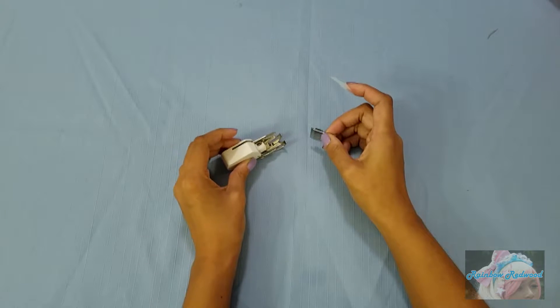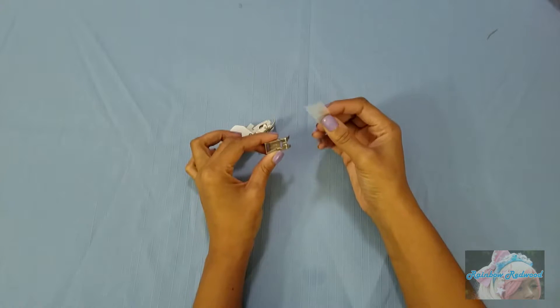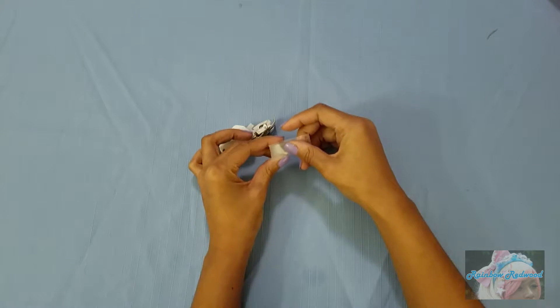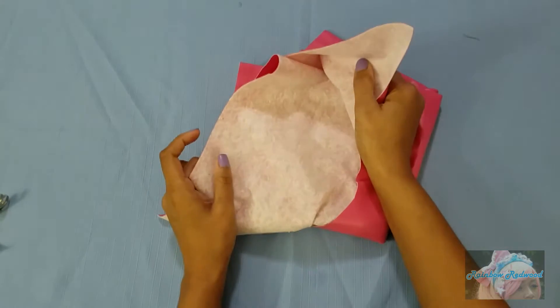You can use a walking foot to sew this or you can just take your regular foot and put the matte invisible tape onto it and then cut away the opening.